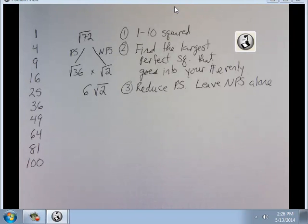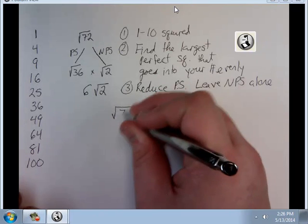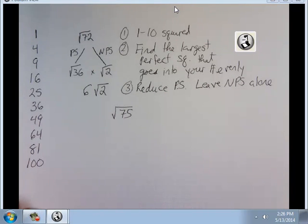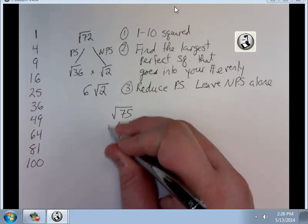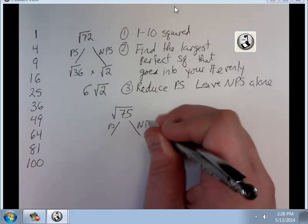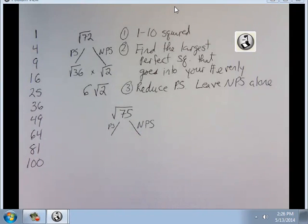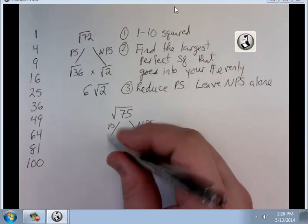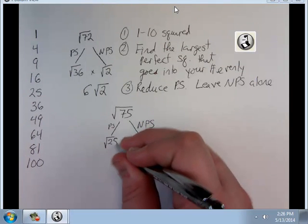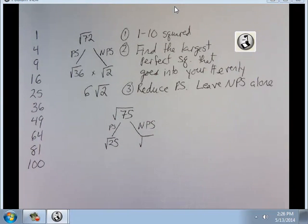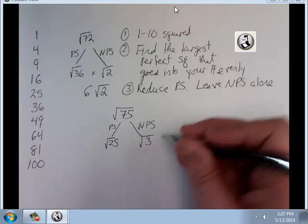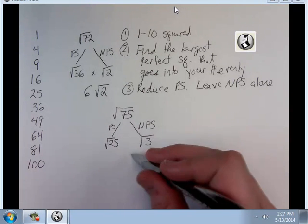So let me give you another couple ones to try. Square root 75. This one's a little bit easier. Now I've got my 1 through 10 squared. Perfect square, non-perfect square. Largest perfect square that divides evenly into 75 is 25. And 25 times what gives me 75? Well, it's 25 times 3. Square root of 25 I know is just 5. So it's 5 times radical 3.